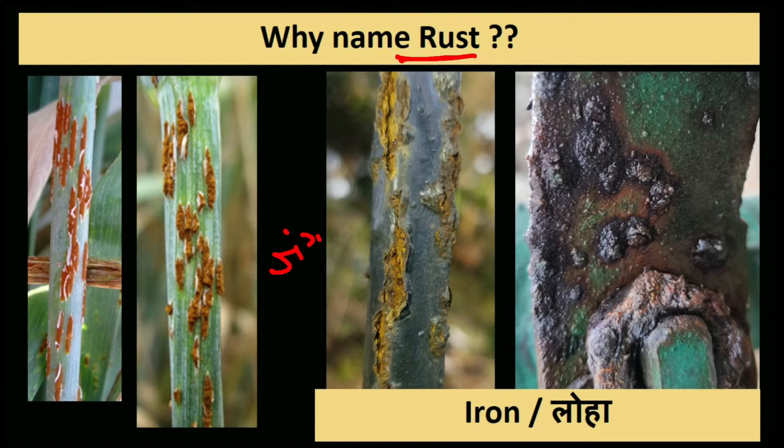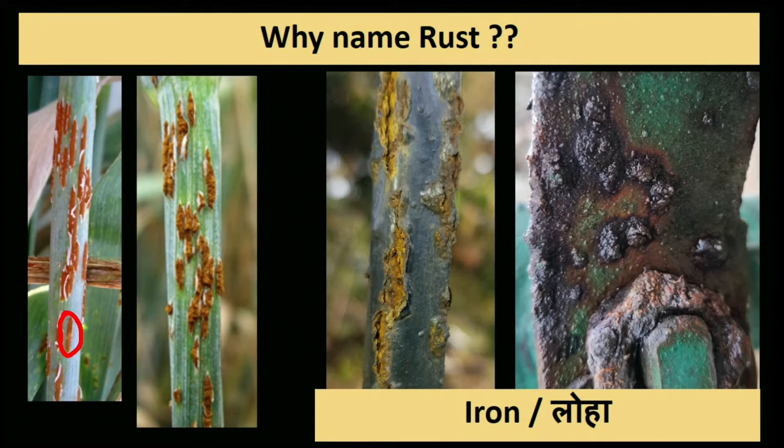When iron rusts, its surface looks raised and later breaks apart. Similarly, when wheat gets infection, the pathogen grows there, the surface becomes raised, and later this membrane ruptures and spores come out. That is why this disease is called rust.